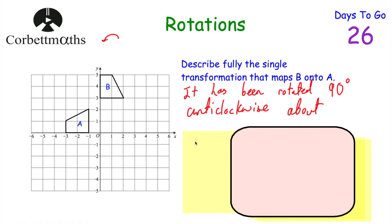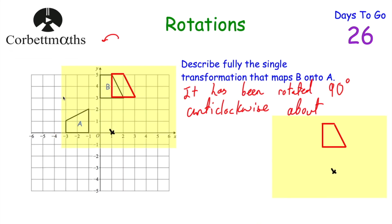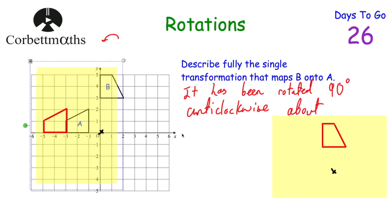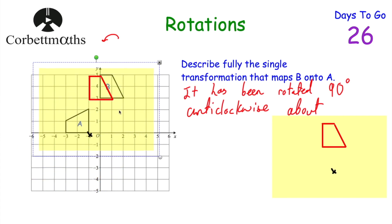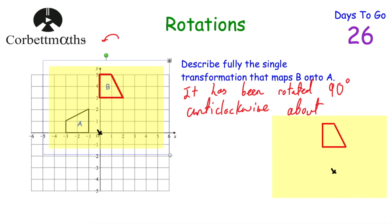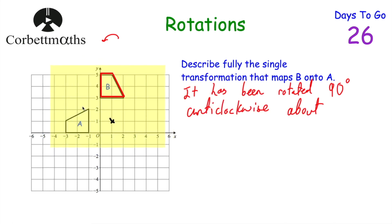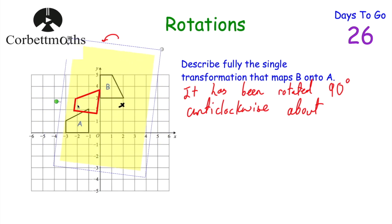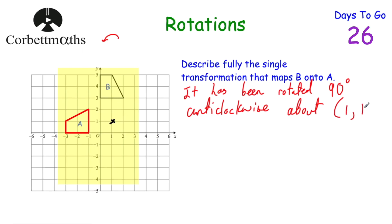To find the centre of rotation, I use trial and error — get tracing paper, draw over B, mark where I think the centre is, and rotate 90 degrees anti-clockwise to see if it lands on A. For example, trying the origin: rotating 90 degrees anti-clockwise from there doesn't land on A, so the origin isn't it. I'd try different points until I find the right one. Trying the point (1, 1): rotating 90 degrees anti-clockwise now lands exactly on A. So the centre of rotation is (1, 1).